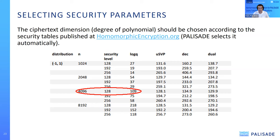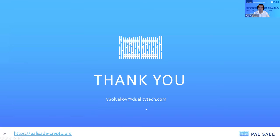This trade-off between security parameters and runtime will be covered in future seminars in more detail. The security standard table from homomorphicencryption.org is suggested as a first starting point. That concludes the main presentation — are there any further questions?